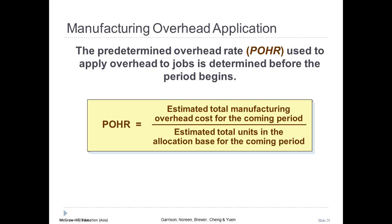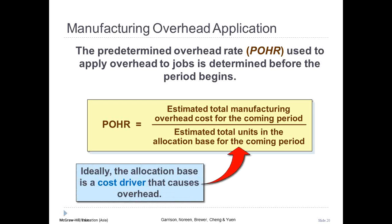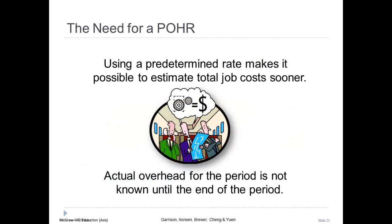If our allocation base is machine hours, we estimate the total number of machine hours used in production in the coming period. Ideally, the allocation base should be a cost driver, as it causes overhead to be incurred. Predetermined overhead rates based on estimated data are used because actual overhead rates are simply not known until the end of the period, and actual overhead costs can fluctuate seasonally, thus misleading decision makers.